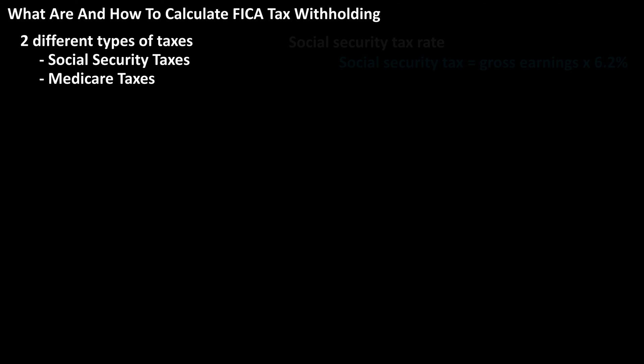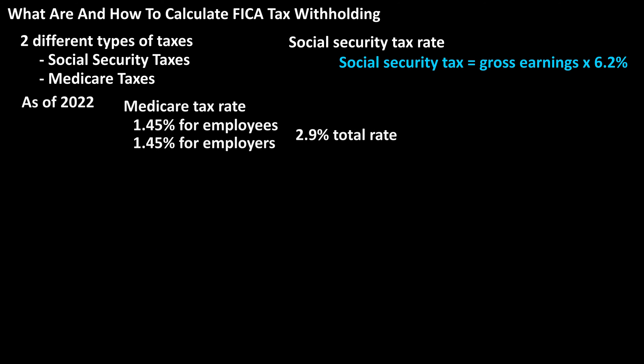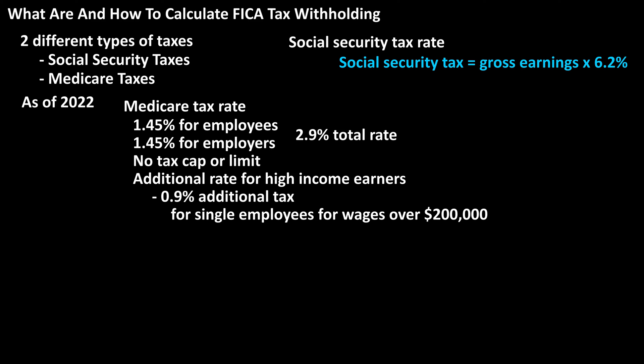Now for Medicare taxes. As of 2022, the current Medicare tax rate is 1.45% for employees and 1.45% for employers, totaling a rate of 2.9%. This rate does not have a tax cap or limit, and there is an additional Medicare tax for high-income earners. Single employees whose wages exceed $200,000 are subject to a 0.9% additional Medicare tax.